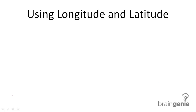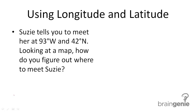Now sometimes you're going to need to use longitude and latitude degrees to find a specific point. Susie tells you to meet her at 93 west and 42 north. Looking at a map, how do you figure out where to meet Susie?